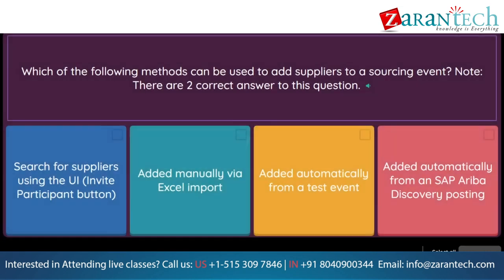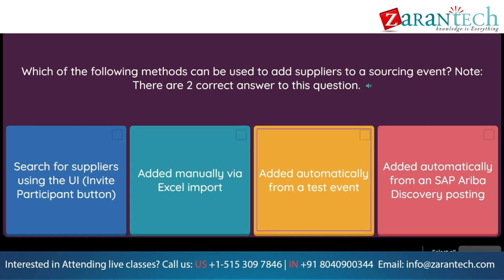Question: Which of the following methods can be used to add suppliers to a sourcing event? Note, there are two correct answers to this question. Option 1: search for suppliers using the UI invite participant button. Option 2: added manually via Excel import. Option 3: added automatically from a test event. Option 4: added automatically from an SAP Ariba Discovery posting.